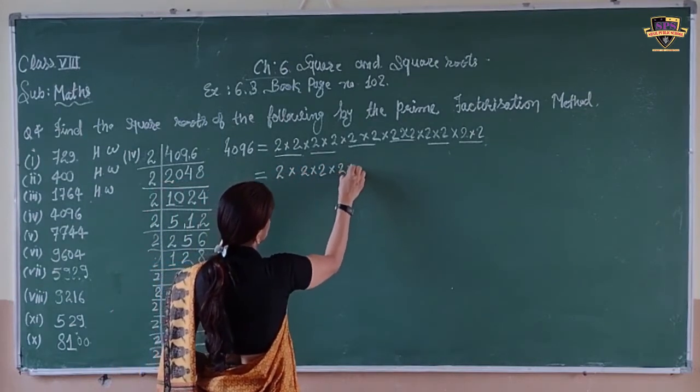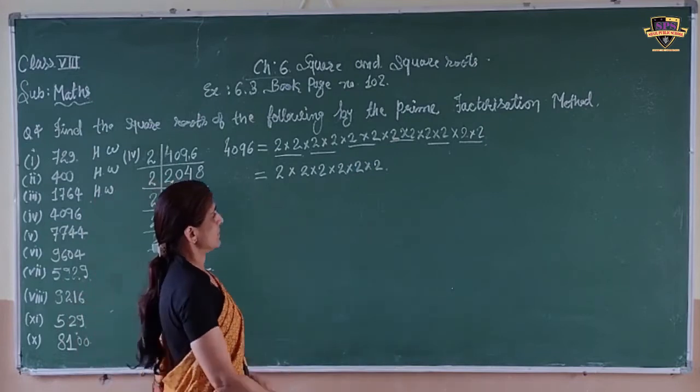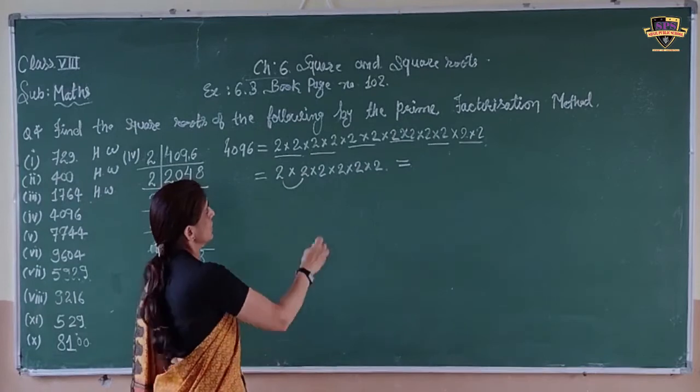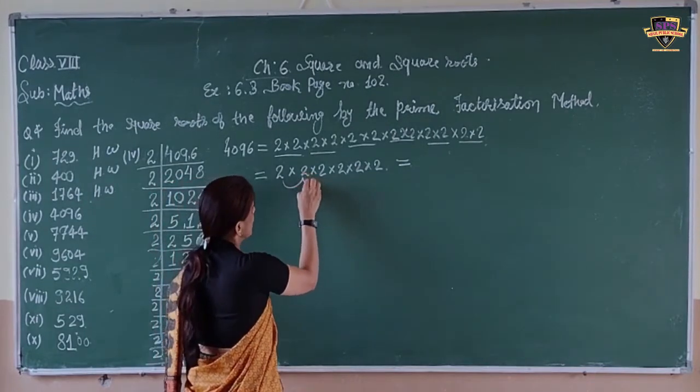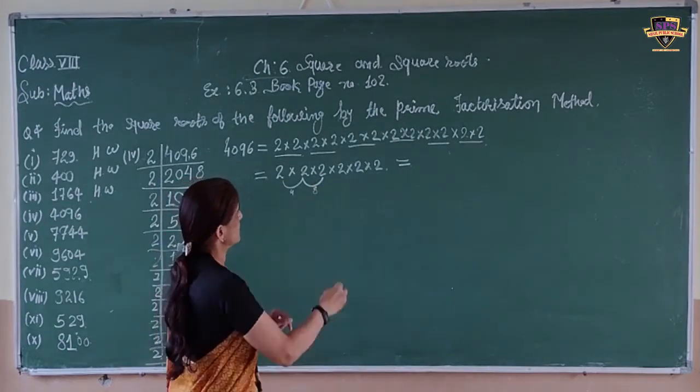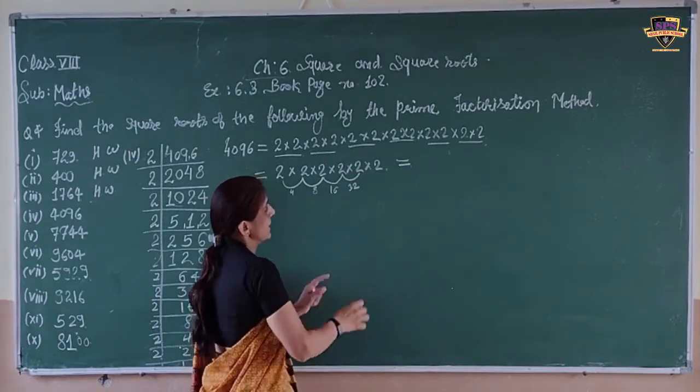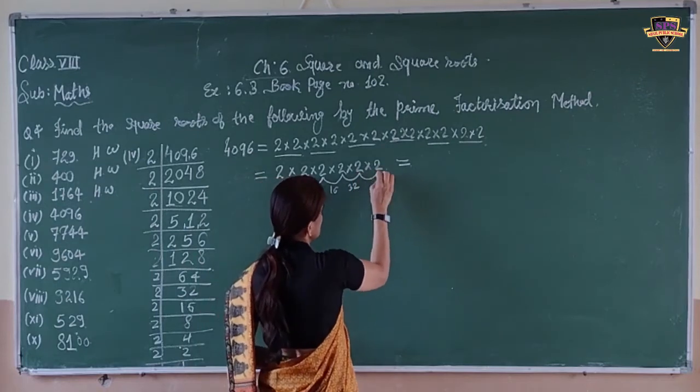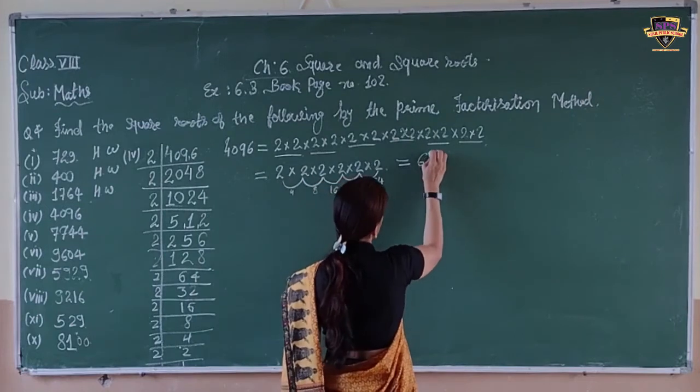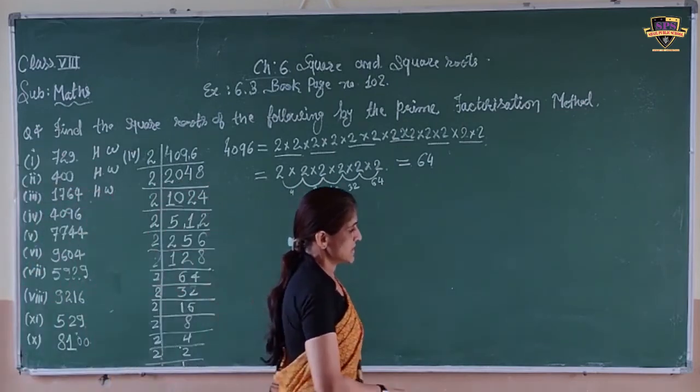So write here 2 to the power 6. Now multiply the pairs: 2, then 4, then 8, then 16, then 32, then 64. So we get 64. The given number is a square root of 64.